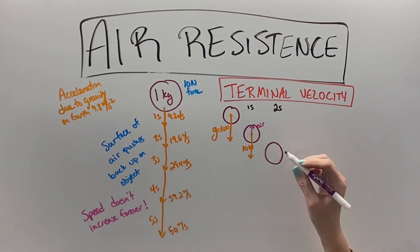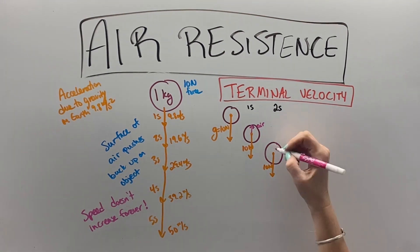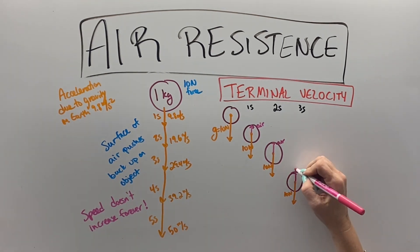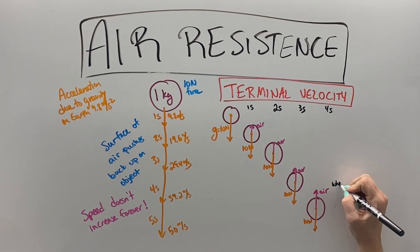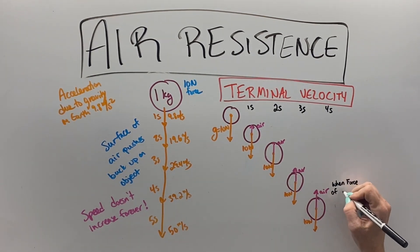But every second, the air also starts to push back against the object. And eventually, it depends on the object, the force of the air will balance out and oppose the force of gravity, and the object stops accelerating. It continues falling, it just doesn't fall any faster.